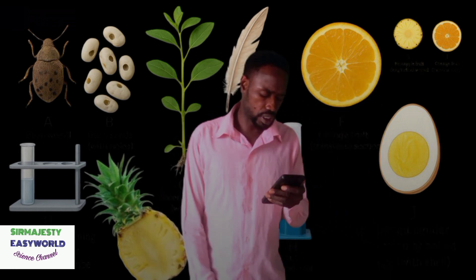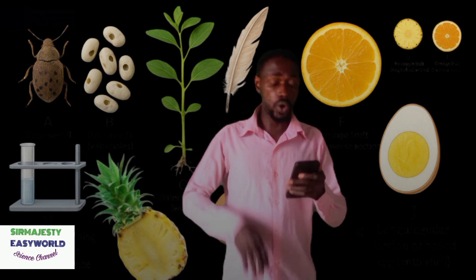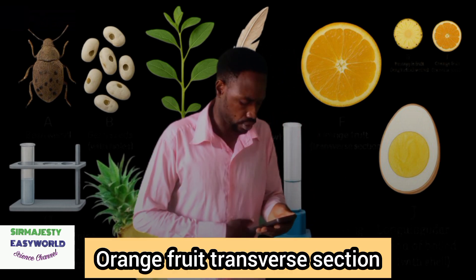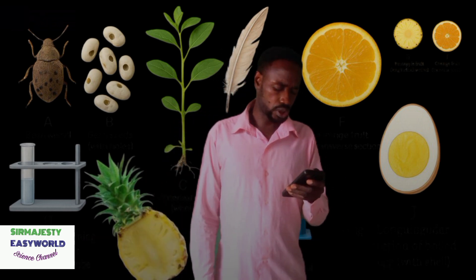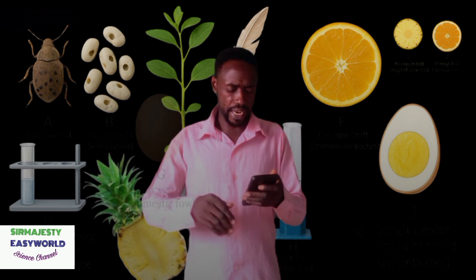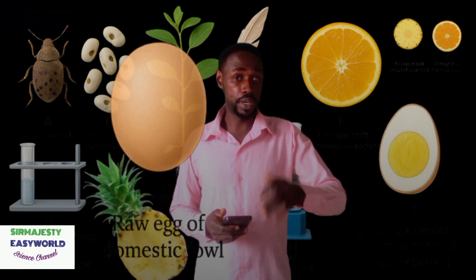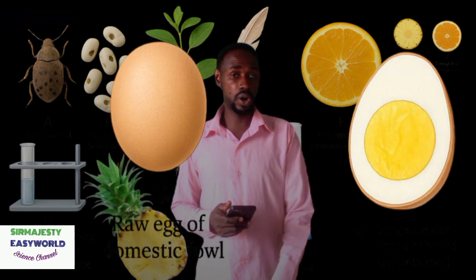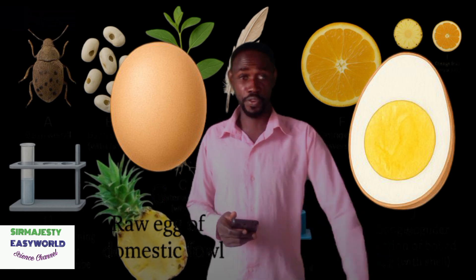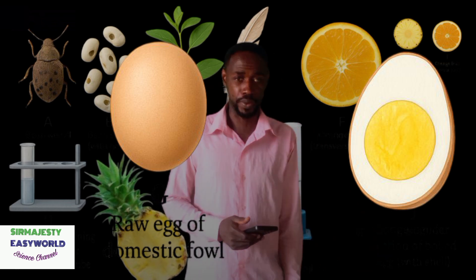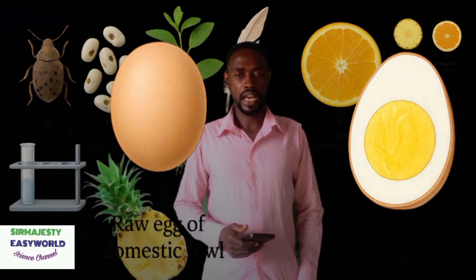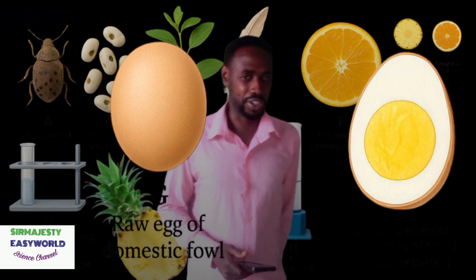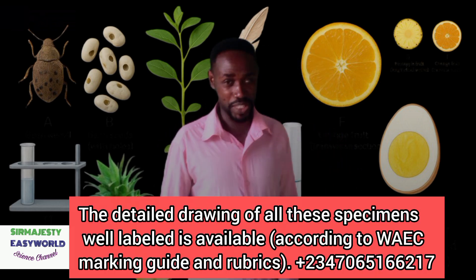Then we go also take a look at orange, but this time around the transverse section of orange. And there we also see the raw egg of a domestic fowl. So we get two eggs here — the one we didn't boil for you, and the one we never boil. If you sell out you get money.